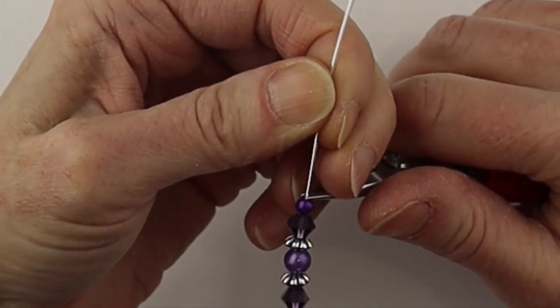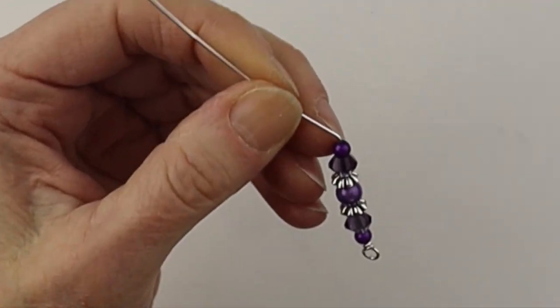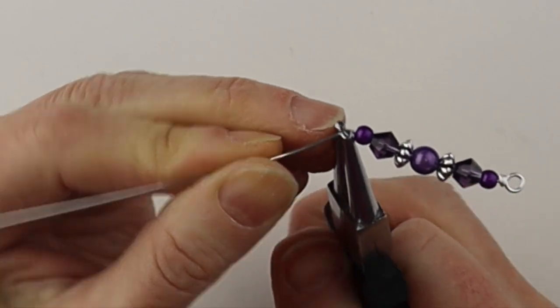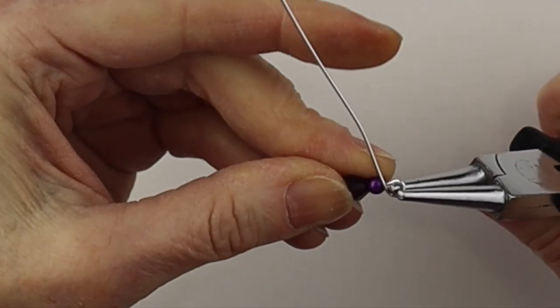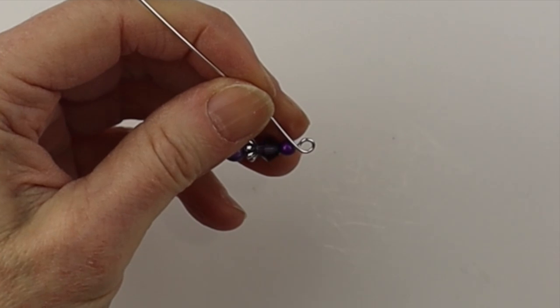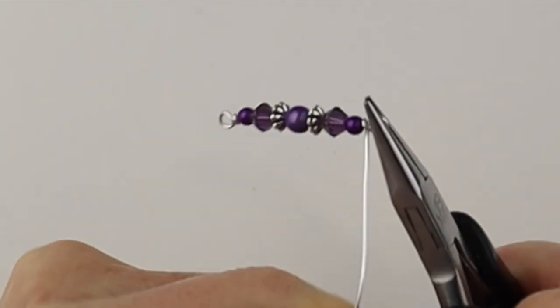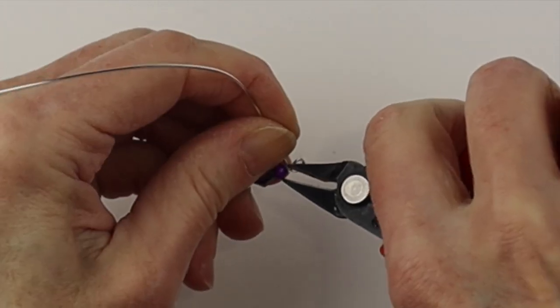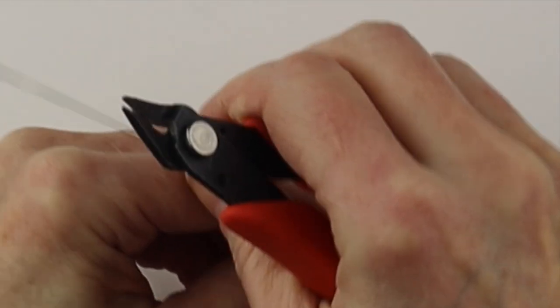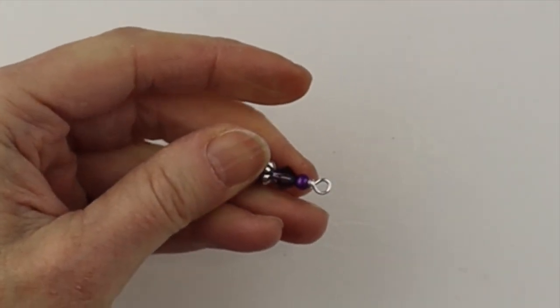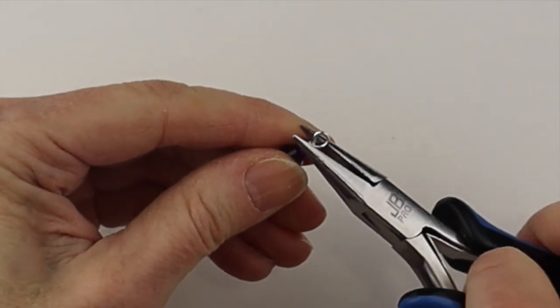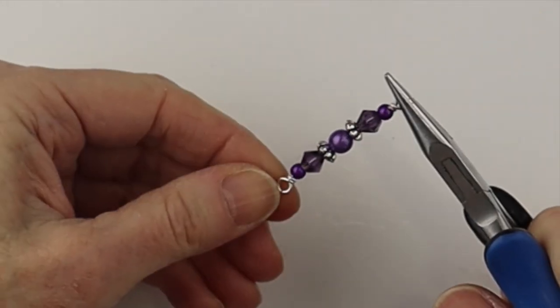So we're going to bend the end at a bit of an angle and with the round pliers wind it around to make another loop on the other side. And then we're going to wind that end around and clip it. So we need to make four pieces like this. Pinch the end in place.